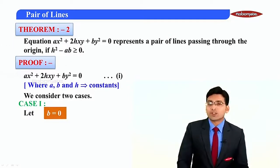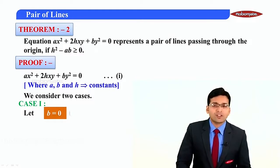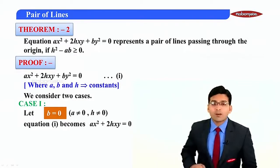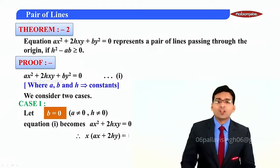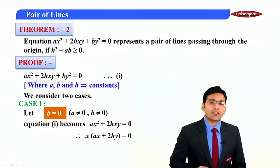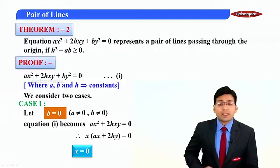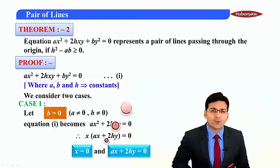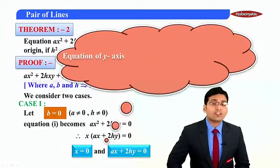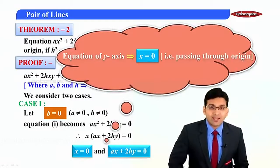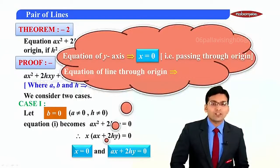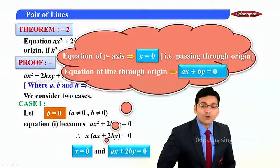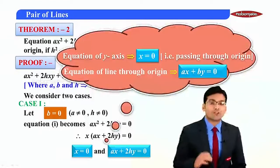Case 1: let b = 0. If b = 0 and a and h are non-zero, then equation 1 becomes ax² + 2hxy = 0, which simplifies to x(ax + 2hy) = 0. So either x = 0 or ax + 2hy = 0. The first equation is the equation of the y-axis (x = 0), and the second is the equation of a line passing through the origin. That means both lines pass through the origin when b = 0.